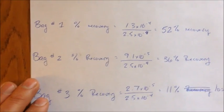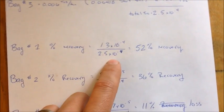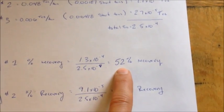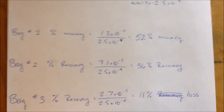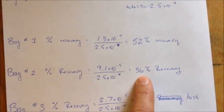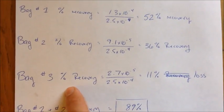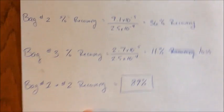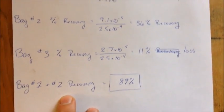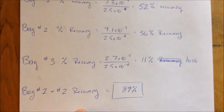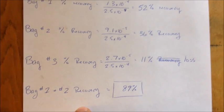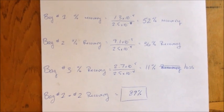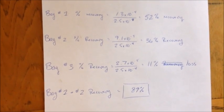So now we can find out our percent recovery. You take the amount of metal in baggy 1 and divide it by the total amount of metal in all three samples. So baggy 1 had 52% recovery of the platinum. Baggy number 2 had 36% recovery of the platinum. And the final bag which was the tailings, we had 11% loss. I had recovery but it was actually a loss because it went to waste. So when you add up bag 1 and bag 2, 52 and 36, it's a little rounding error in there, you end up with 89% recovery.